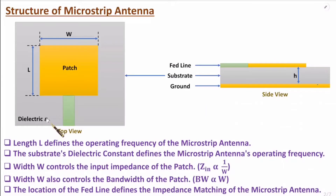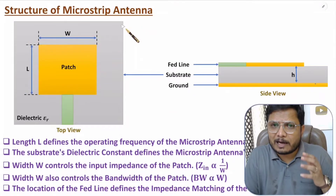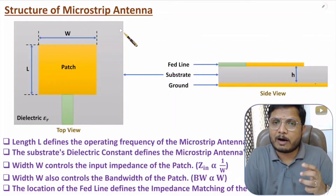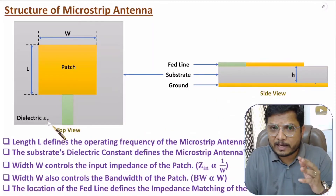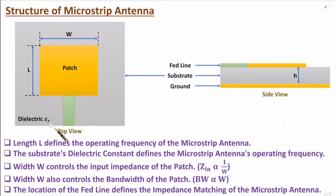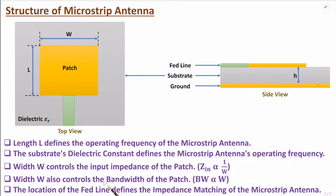Epsilon r value and length are very essential in determining operating frequency of microstrip antenna. In next coming videos I'll explain designing parameters showing how operating frequency depends on length and epsilon r. Width W controls many parameters: input impedance Z_in is directly proportional to 1/W, so if you increase W, input impedance decreases. Bandwidth is directly proportional to W, so if you increase W, bandwidth increases.